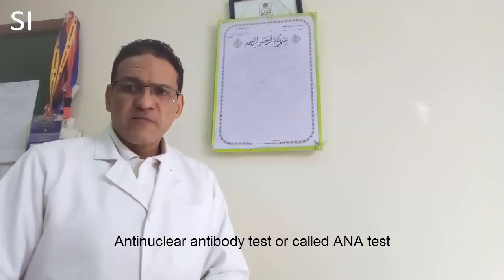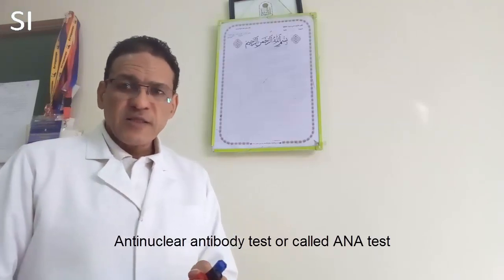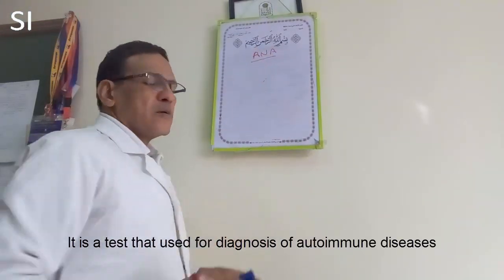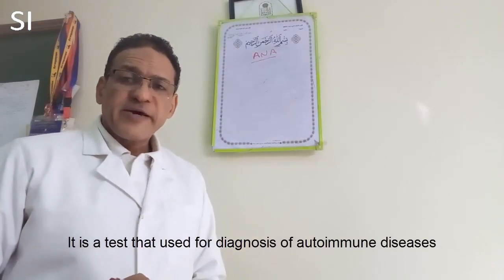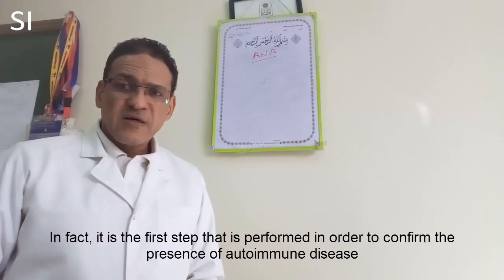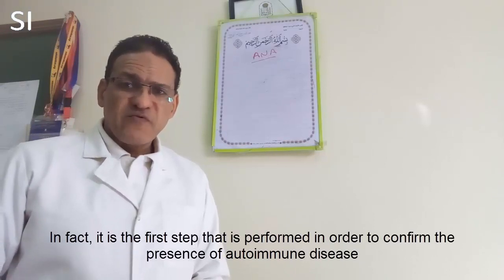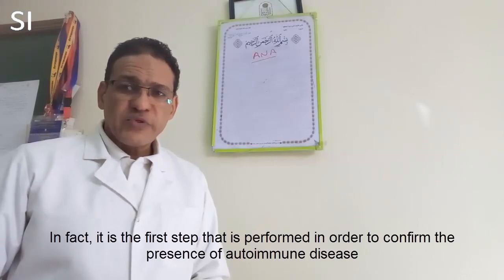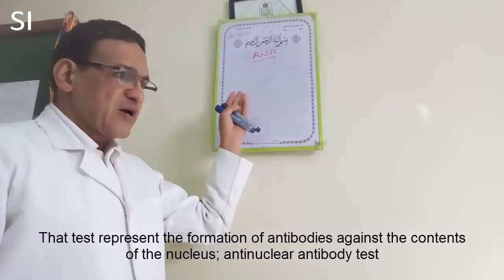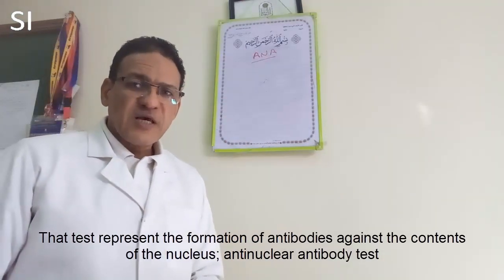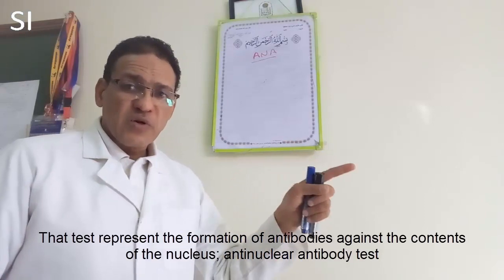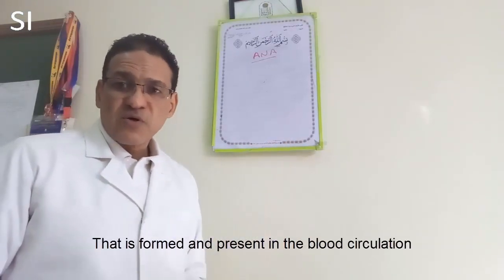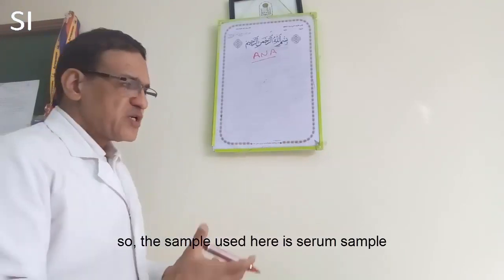The Anti-Nuclear Antibody Test, or ANA Test, is used for the diagnosis of autoimmune diseases. It is the first step performed in order to confirm the presence of autoimmune disease. The test detects the formation of antibodies against nuclear content, which are present in the blood circulation. The sample used is serum.